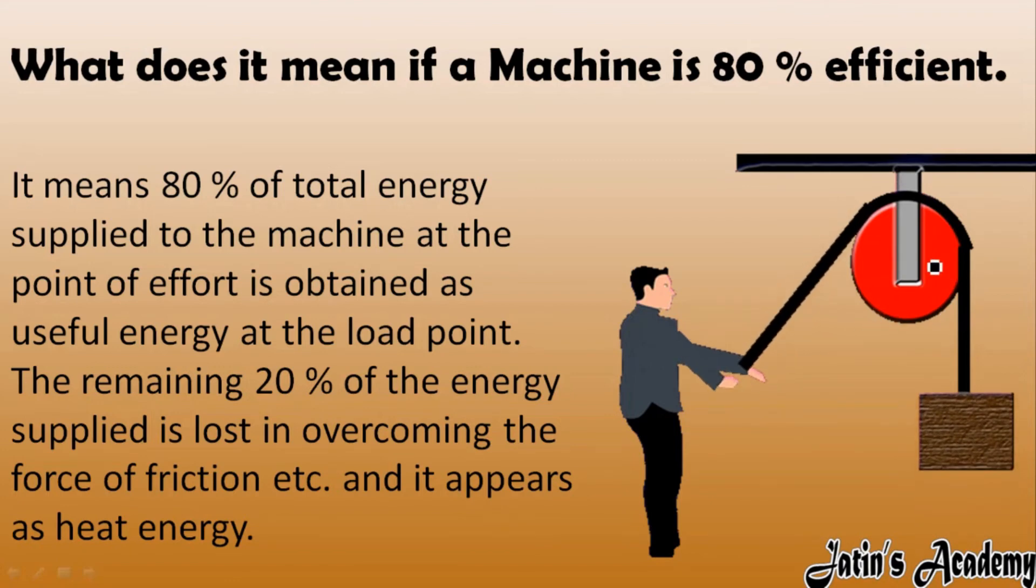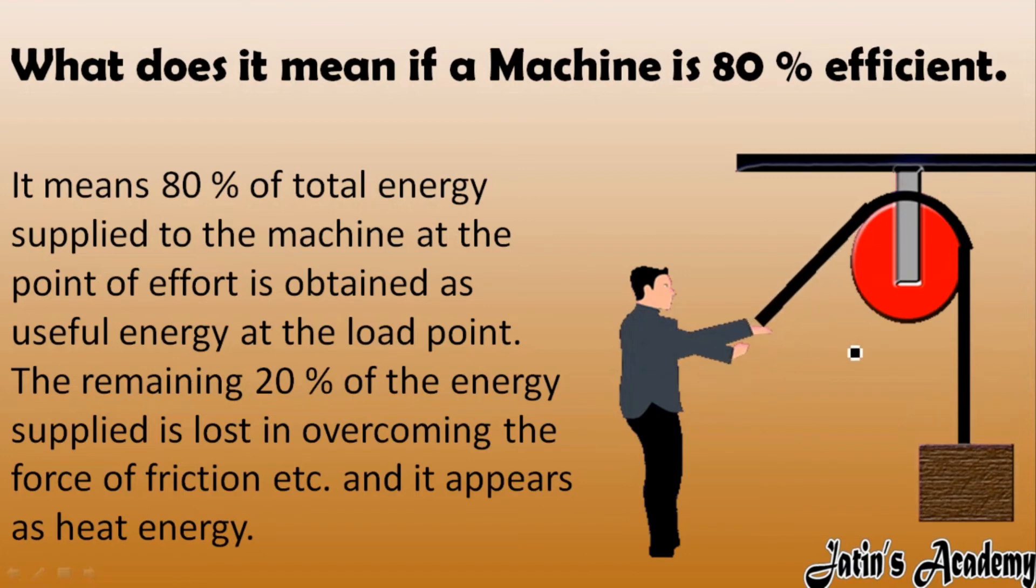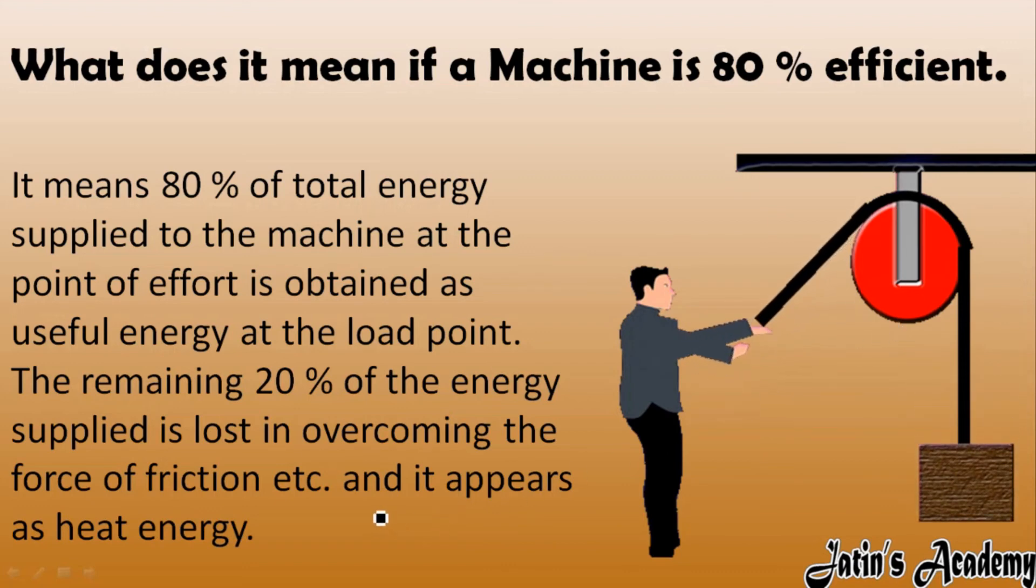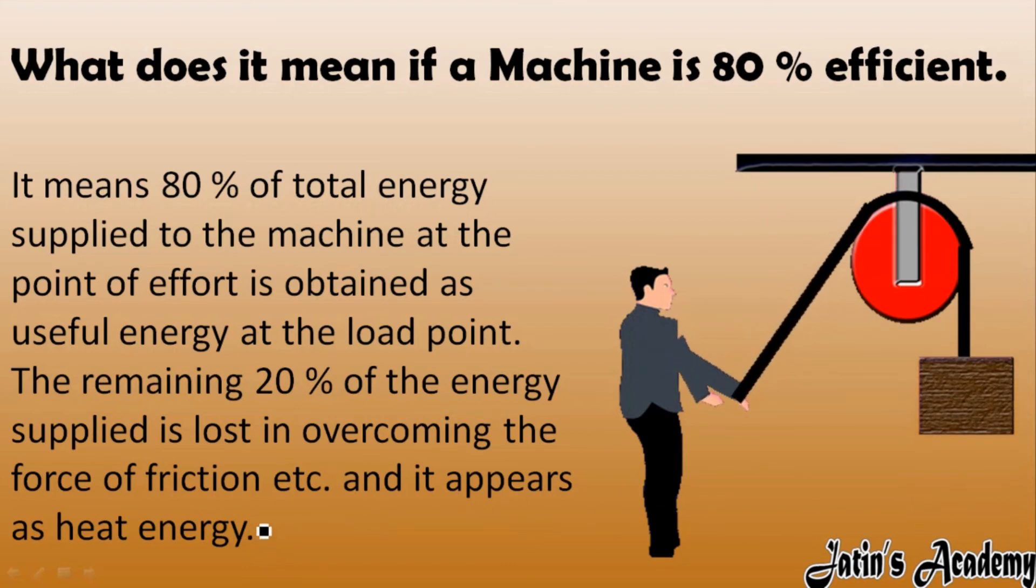Major losses is friction. There are small losses, but the major one we have is friction force. To overcome the friction force, 20% energy is lost and it appears in the form of heat energy.